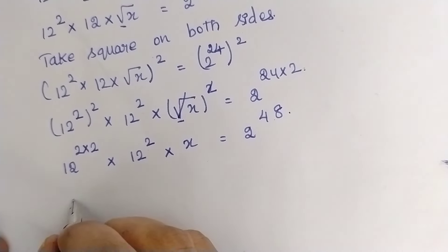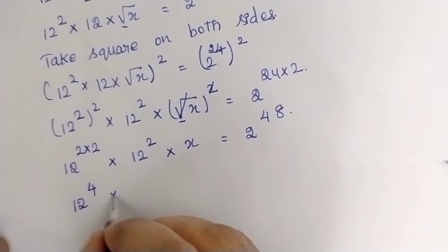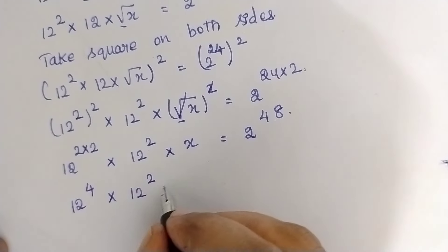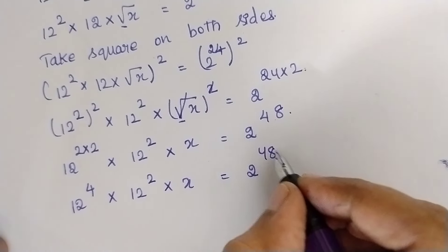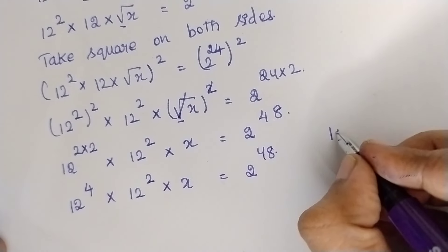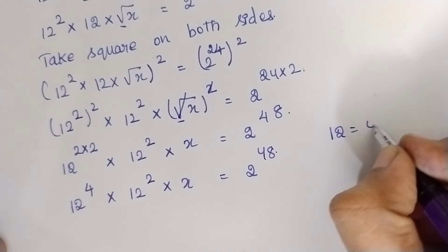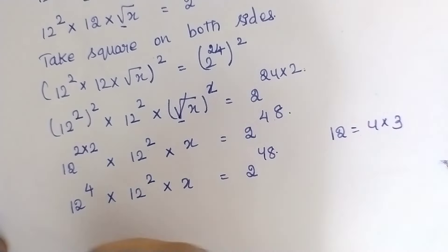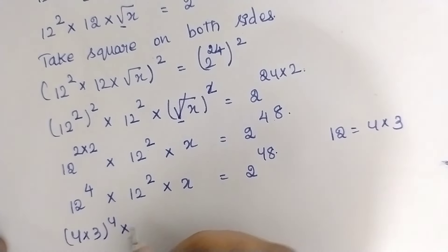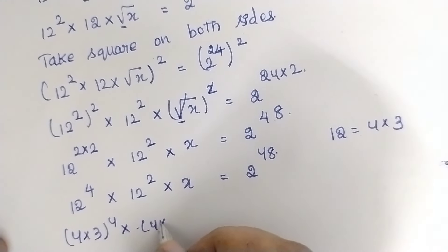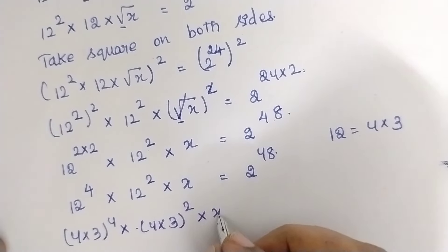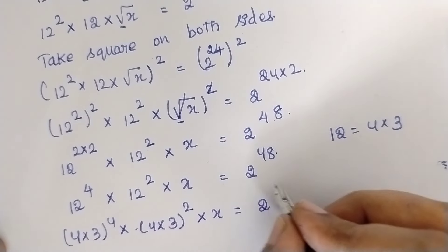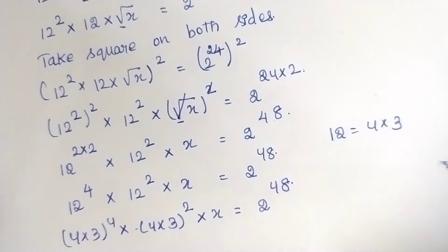Let's simplify: 2^4 multiplied by 2^2 multiplied by x, which is equal to 2^48. Now I'm going to write this as: (4×3) to the power 4, multiplied by (4×3)², multiplied by x, which is equal to 2^48. We know that 4 equals 2², so 4 can be written as 2².